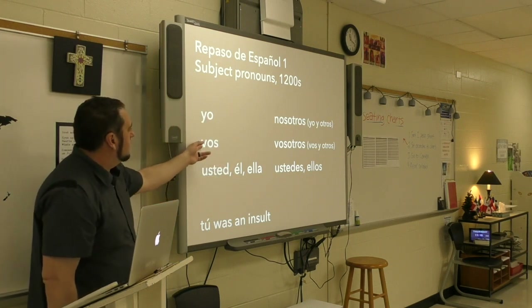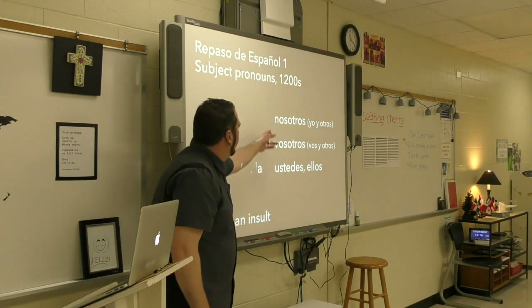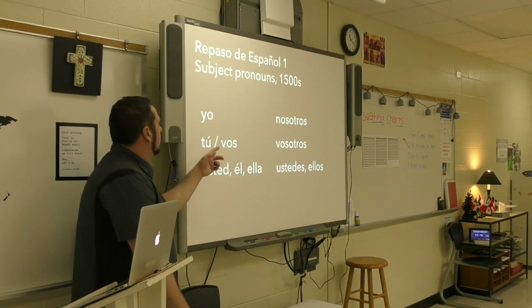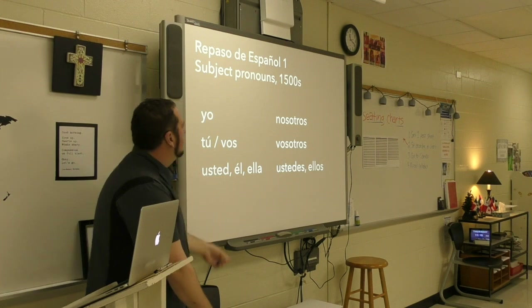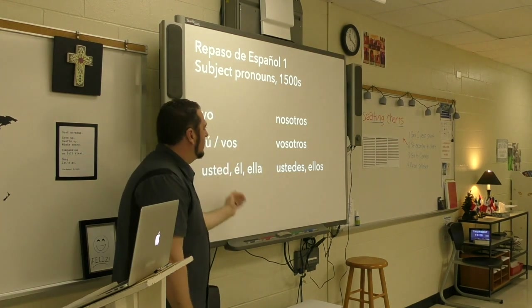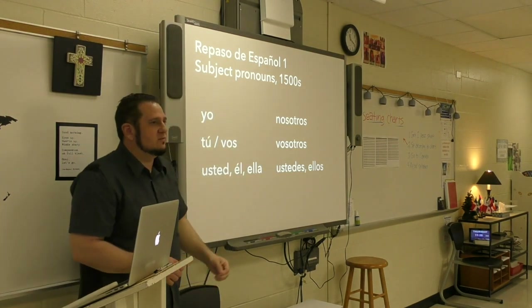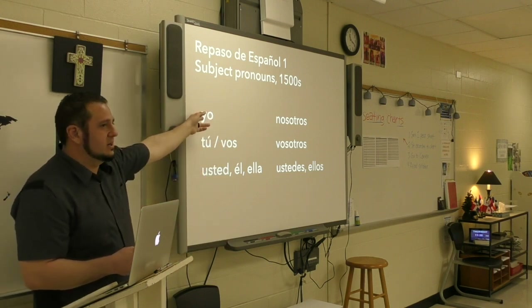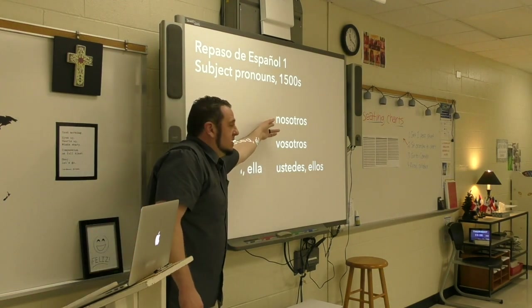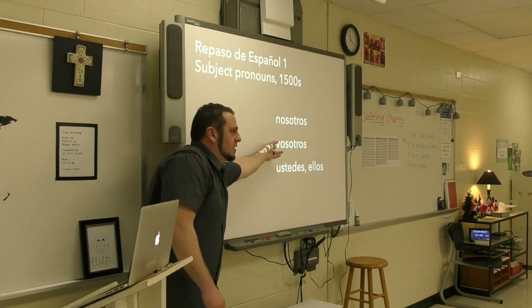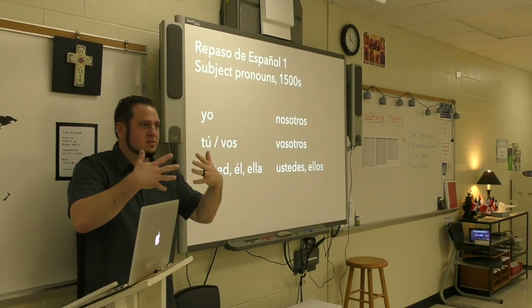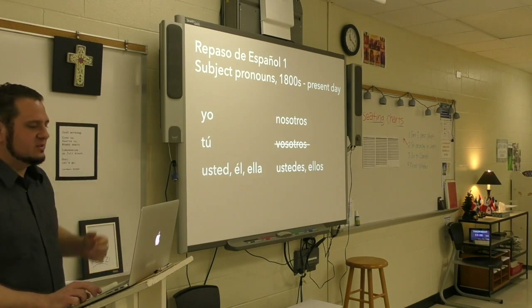So here's the layout: first person singular, second person singular, third person singular, first person plural, second person plural, third person plural. Everything on the left side is singular, everything on the right side is plural. When we conjugate verbs, you'll see the exact same format — first person singular always here, third person plural always here. This format never changes; it's like a puzzle that always goes in the same order. These are the subject pronouns from about the 1800s to the present day.